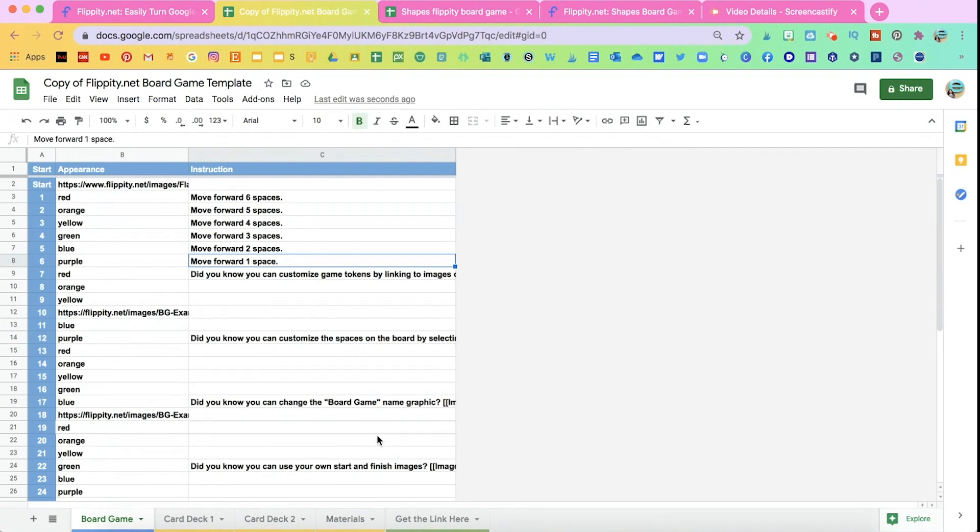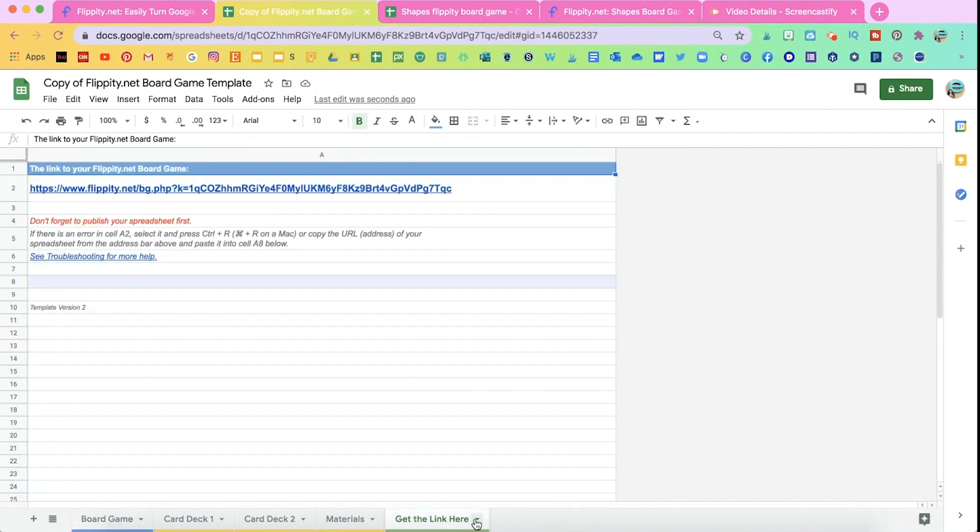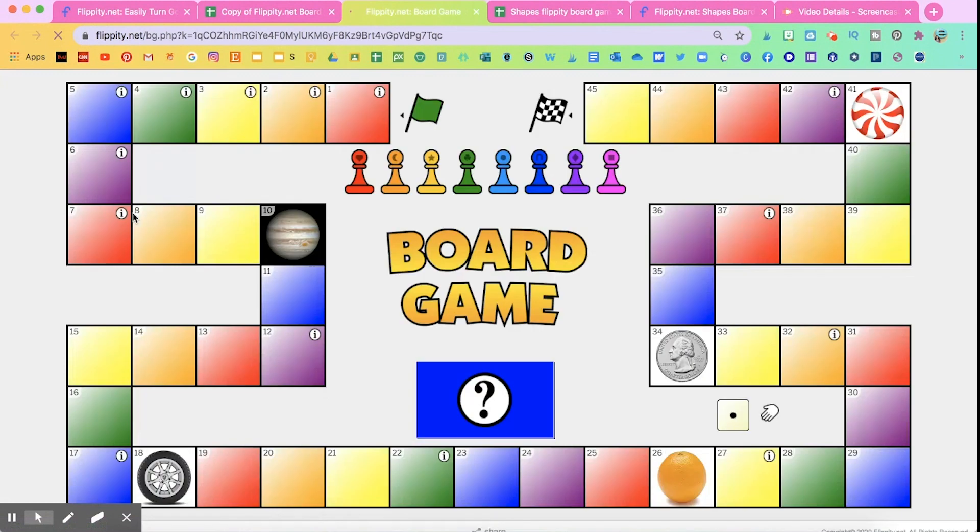You don't need to copy that link. And then you're going to go back here and the very last tab says get the link here. Click there and you're going to see that link. That's the link where my game is going to be published. So I'm going to click on that link and I'm going to keep that tab open